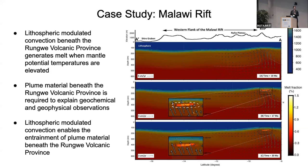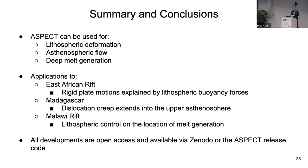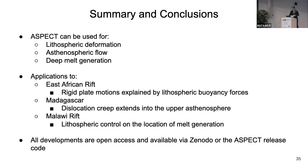Key conclusions: lithospheric modulated convection does produce melt beneath the Rungwe volcanic province, it could entrain plume material, and this work suggests a plume is necessary beneath the Rungwe volcanic province to produce these melting conditions. To summarize, I've shown three developments in ASPECT — lithospheric deformation, asthenospheric flow, and deep melt generation — all available open access through Zenodo or within the ASPECT development code.